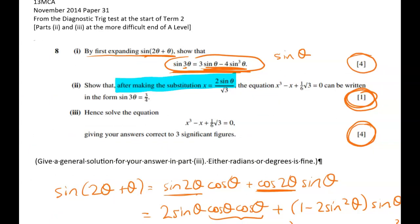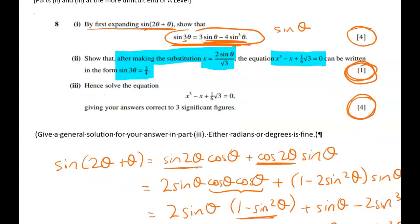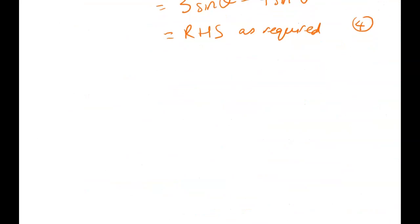Show that after making this substitution we can turn this cubic equation, which is going to be a bit icky to solve, into a simple trig equation. So it's kind of clear what to do but there's still a bit of work. Let's start with the cubic. We've got x cubed minus x plus one sixth root three equals zero.